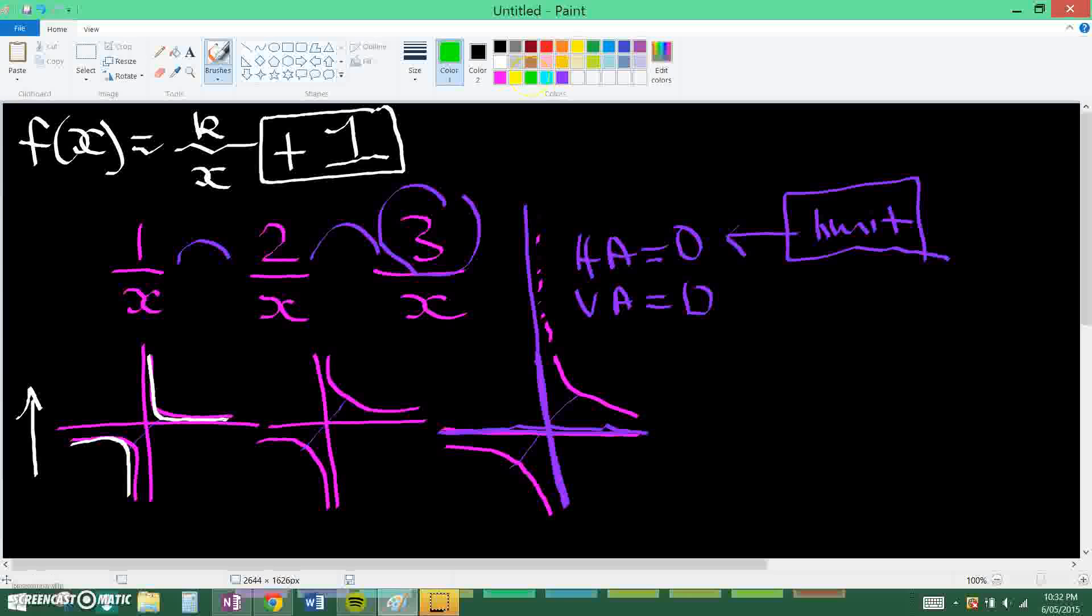The vertical asymptote will stay the same, the vertical asymptote will be zero, but the horizontal asymptote will be changed to one and this is because we added a one here.